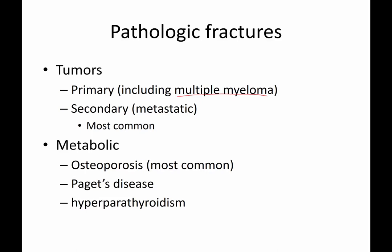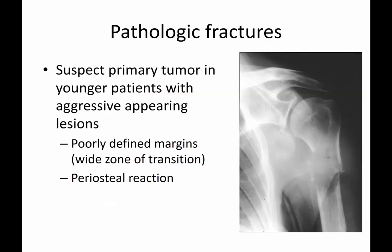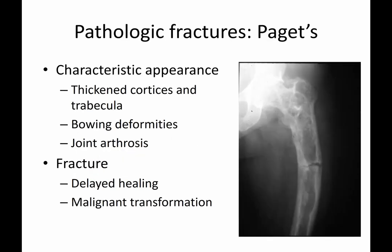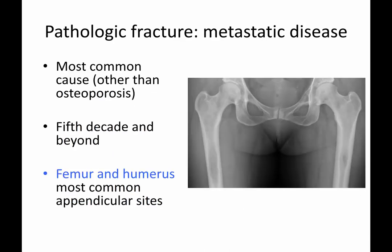Metabolic bone diseases such as osteoporosis, Paget's disease, and hyperparathyroidism can also lead to pathologic fractures. In a young patient with an aggressive-appearing lesion and no known primary cancer, you should consider a primary bone tumor. These may show a poor zone of transition, significant bone loss, and periosteal reaction where the body is attempting to make new bone in response to destruction. Paget's disease features thickened cortices, trabecular changes, bowing deformities, and fractures that can be difficult to heal due to the underlying metabolic disease.